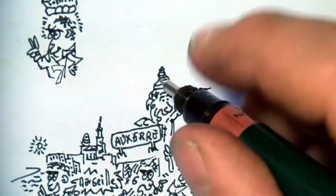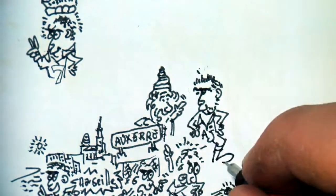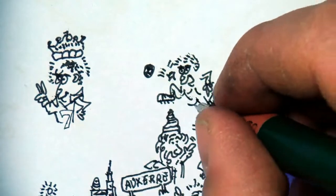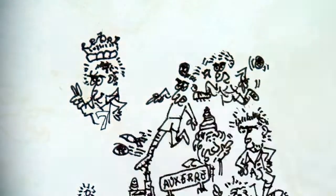Cantona takes off for Auxerre, where the coach succeeds in channeling his talent and temperament. Young Eric blossoms and leads the reserve team to victory.